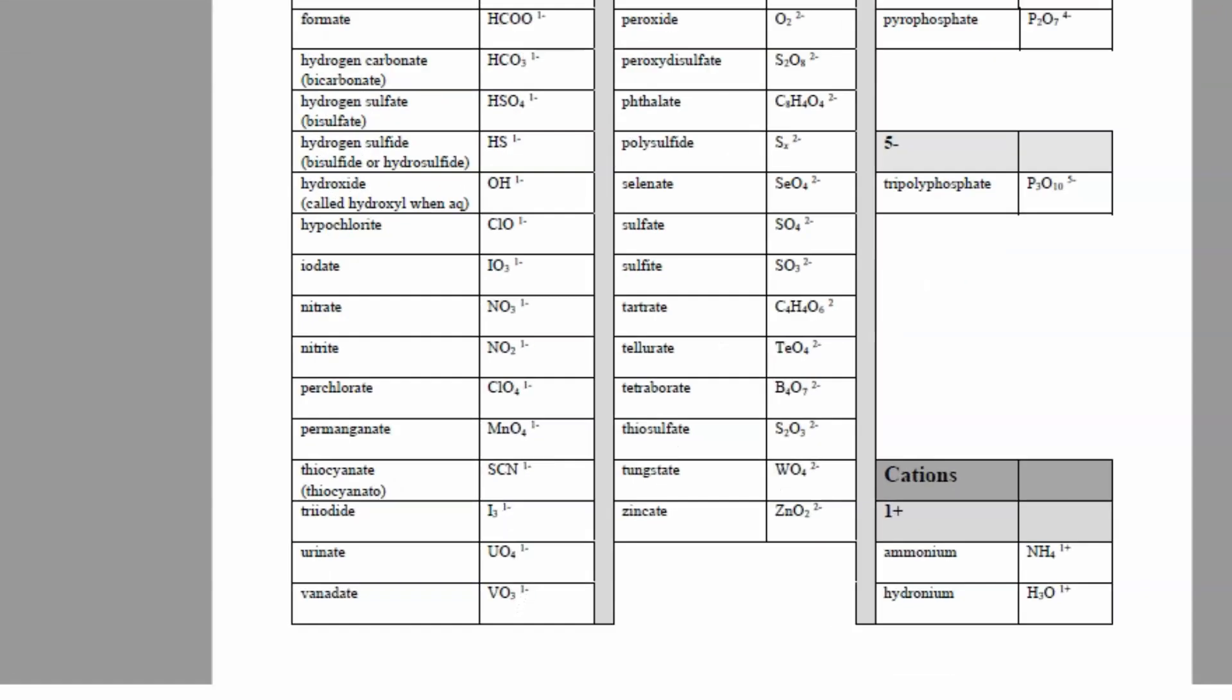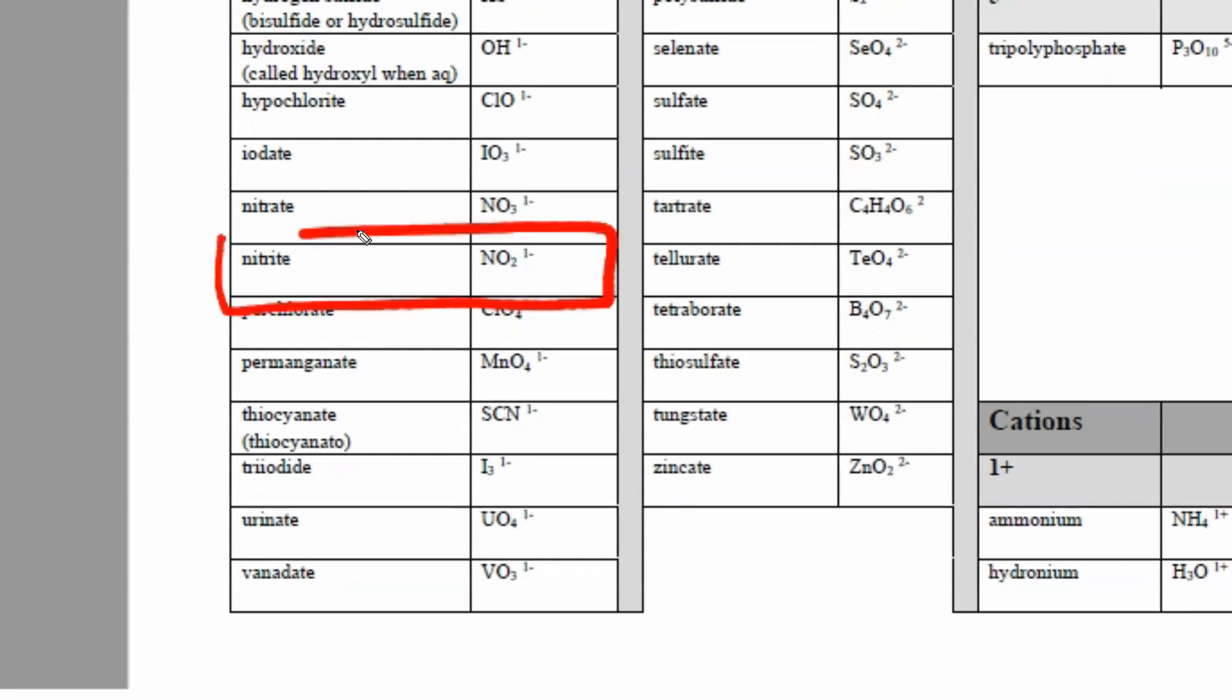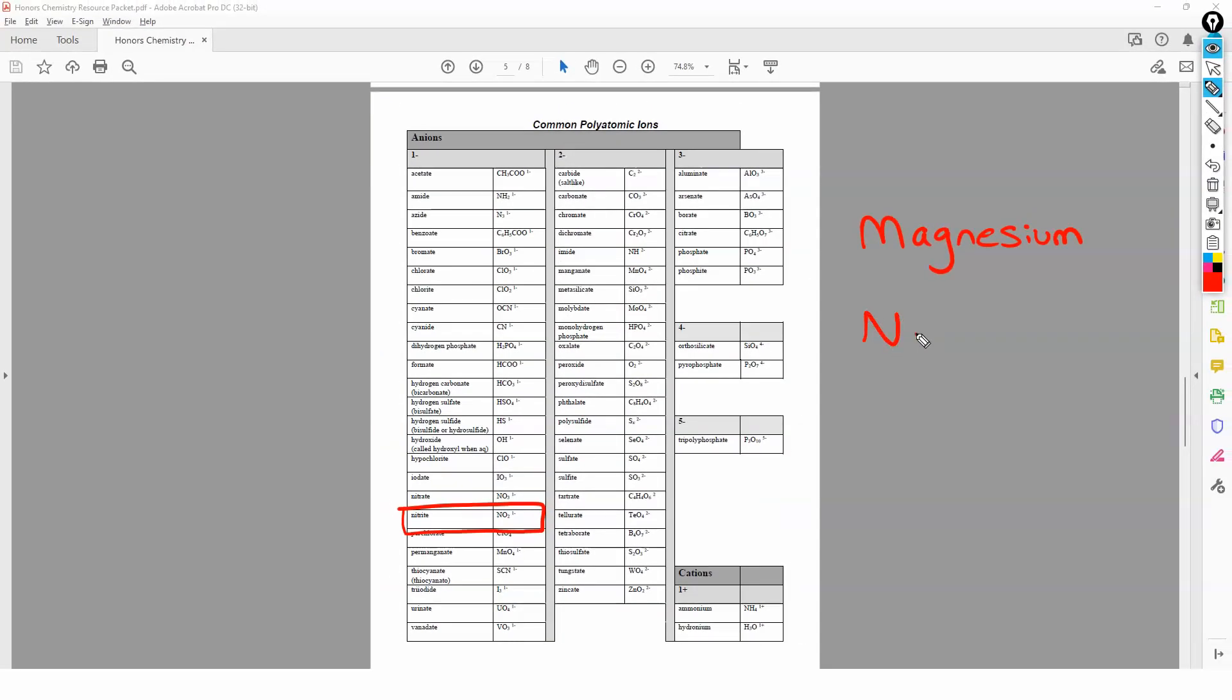So we had magnesium. And then we have NO2. NO2 is right here. It is nitrite. And that's it. Good luck with your future naming. And have fun.